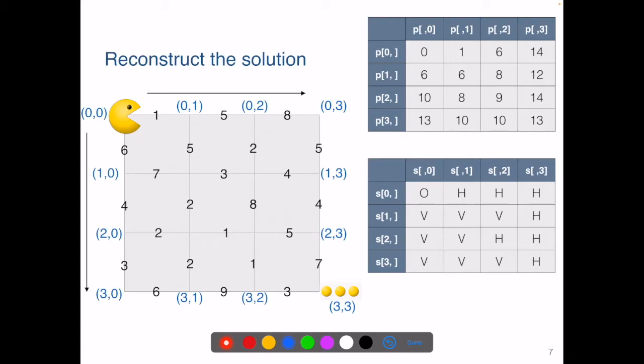For all the positions on the top edge, we know the last step getting to them is a horizontal move. So they all have H, and for all the points on the left edge, the last step is always a vertical move.